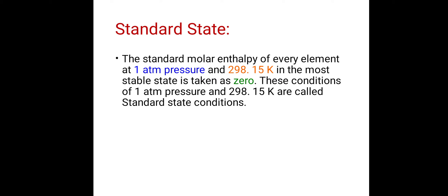What is given? We have pressure at 1 atmospheric pressure, temperature at 298.15 Kelvin, and the element should be in its most stable state. So at that time, the standard molar enthalpy of that element is taken as 0. These 3 conditions are: first, pressure of 1 atmosphere; second, temperature of 298.15 Kelvin; and third, the element is in a stable state. Then we say the substance is in a standard state.